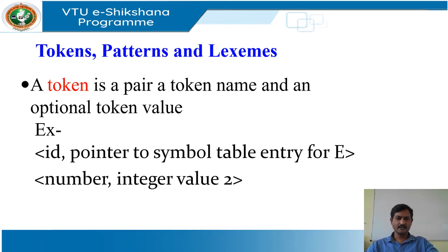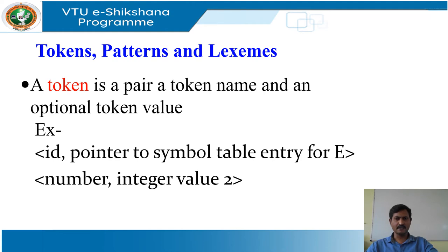Tokens, patterns, and lexemes. A token is a pair consisting of a token name and an optional attribute value. The token name is an abstract symbol representing a kind of lexical unit, for example, a particular keyword or a sequence of input characters denoting an identifier. The token names are the input symbols that the parser processes. For example, id is the token name.